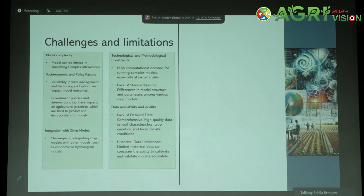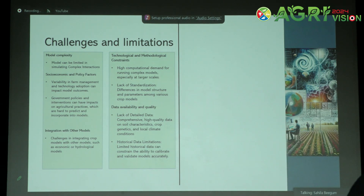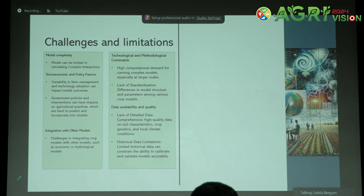Now that we have seen many applications of process-based crop models, using them effectively after understanding their fundamentals and mathematical functions can really help in understanding how agriculture is impacted by climate change and show possible alternative management practices or genetic improvements to tackle the effects. Along with the positive side, there are also challenges and limitations for process-based models. They can be really complex because they incorporate complex interactions between genetics, environment, and management.